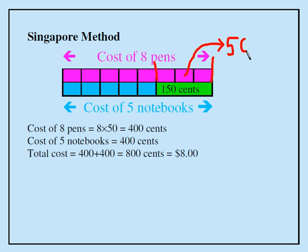Now, so if each rectangle is worth, if each pink rectangle is worth 50 cents, I have eight pink rectangles. These rectangles represent the cost of eight pens. That has to be eight times 50 or 400 cents. And, of course, the cost of five notebooks must be 400 cents.